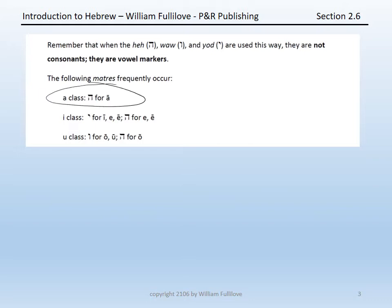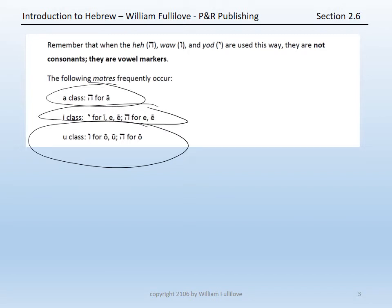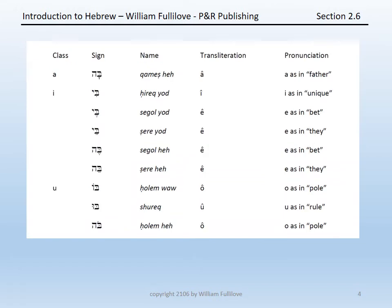In A-class vowels, simply a hey is used to represent a long 'a' sound. In I-class vowels, a yod can represent either a long 'i' sound, a short 'e' sound, or a long 'e' sound, or a hey can indicate a short or long 'e' sound. In the U-class vowels, a vav is used to indicate a long 'o' or long 'u,' or possibly a hey to indicate a long 'o.'